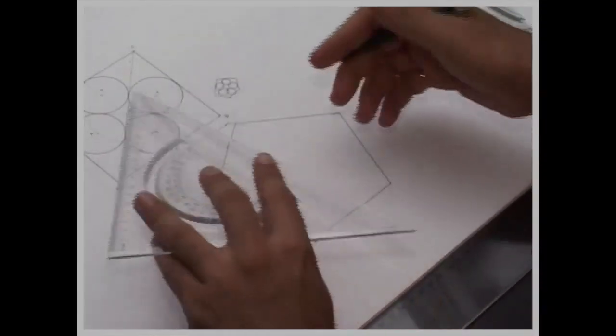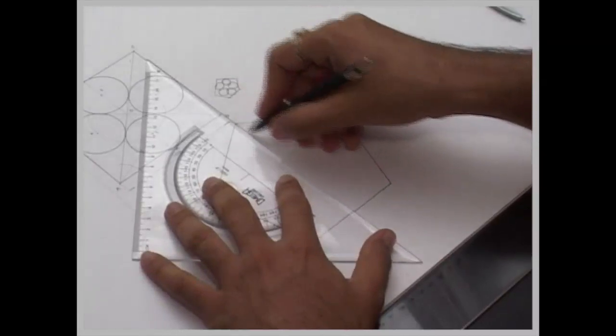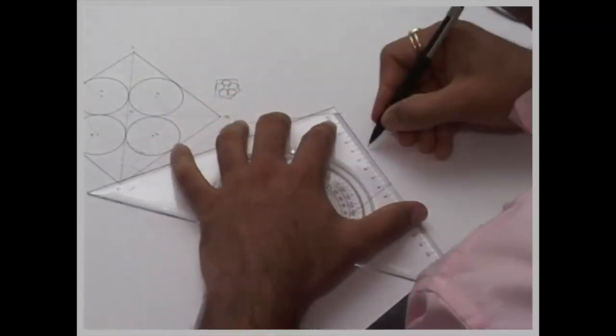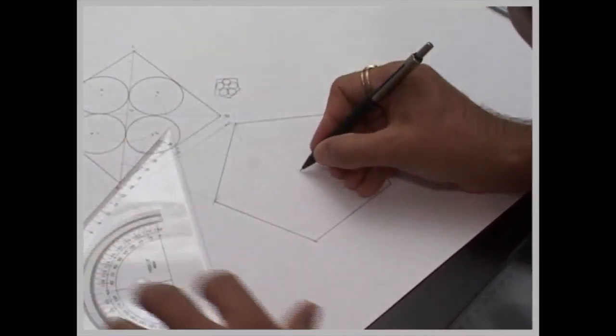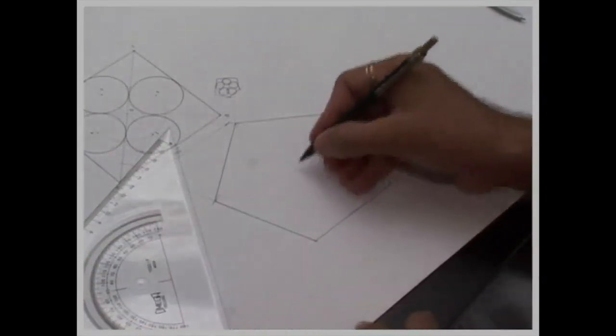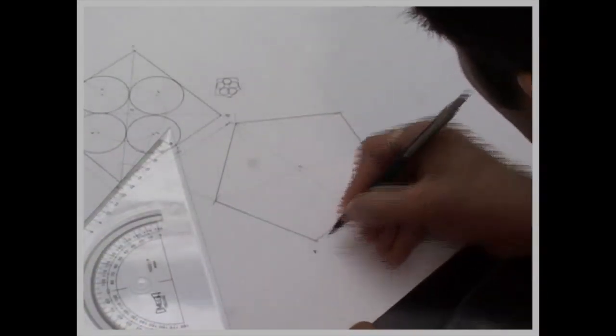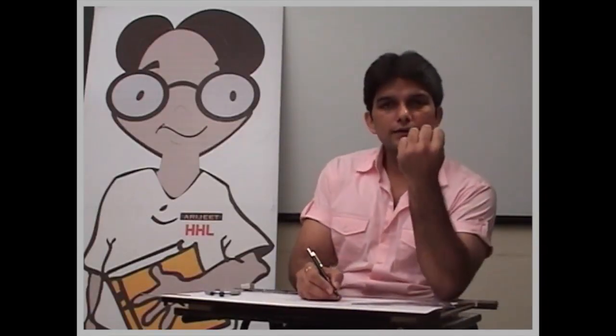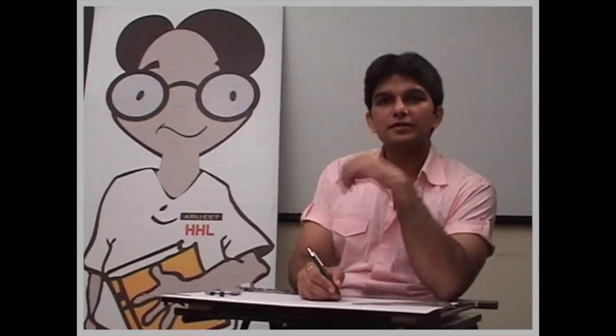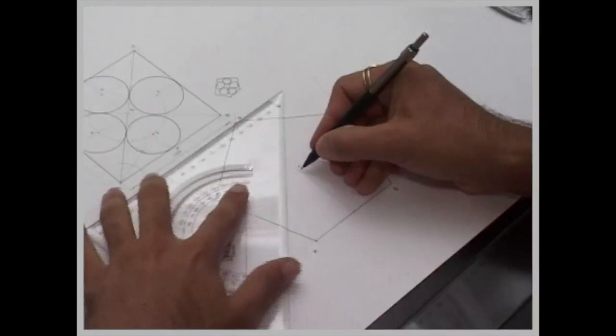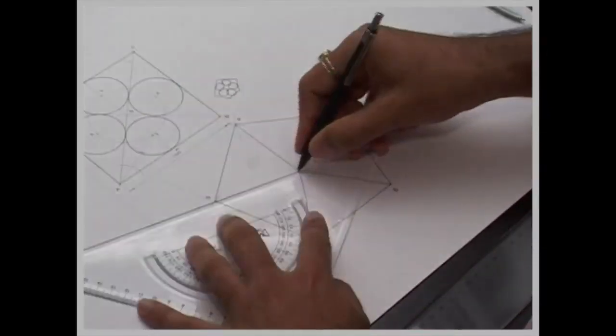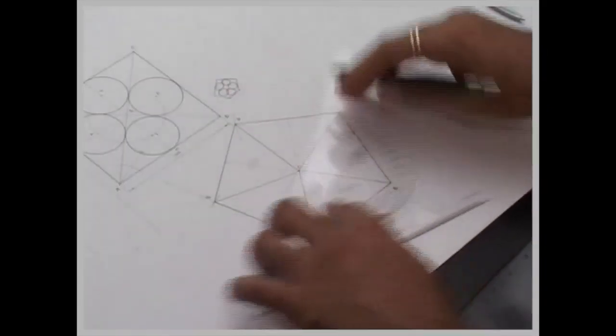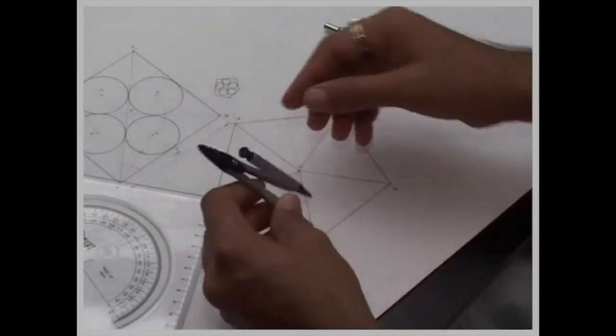Now, follow the same procedure. Again you take midpoint, join to the opposite corner, so you can get a center of the pentagon. Once you got the center of the pentagon, that is O. Now what we have to follow in this, it's the same method. Like see, we have divided triangle into three parts, square into four parts. Now we divide our pentagon into five parts.